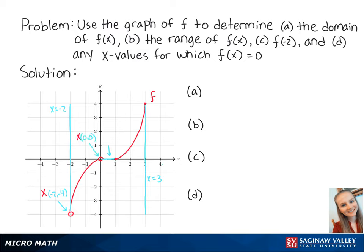We can't include the point where x is equal to 0 because it does not exist, but the point where x is equal to 1 does exist. This means x is between negative 2 and 0 exclusive, and x is between 1 and 3 inclusive.